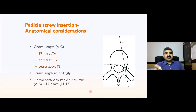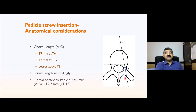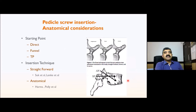The dorsal cortex to the pedicle isthmus is usually around 12.2 millimeters, varying between 11 to 13 millimeters in the thoracic spine. So the point of entry to the isthmus in the pedicle is usually around 12 to 13 millimeters.